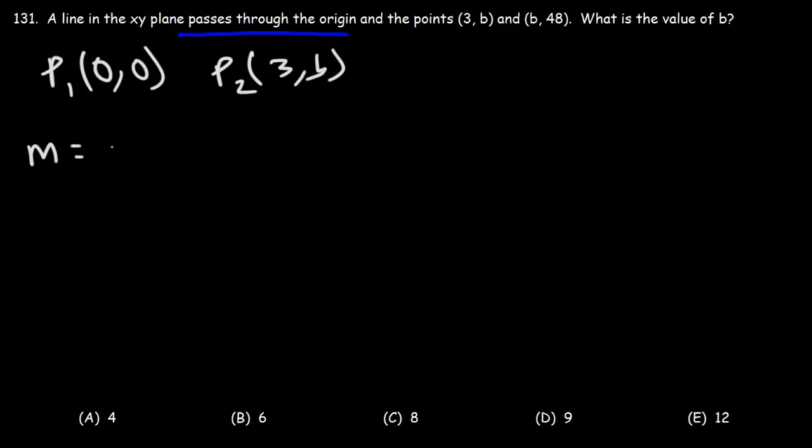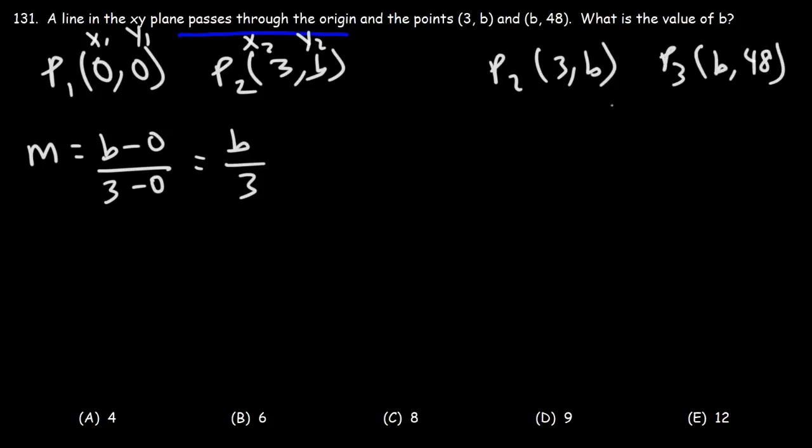So let's start by calculating the slope between the first two points. Let's call this p1 and p2. So it's going to be y2 minus y1. Let's call this x1, y1, x2, y2. So this is going to be b minus 0 divided by 3 minus 0. So the slope is b over 3. Now let's calculate the slope between the second and third point. So we're going to say this is x1, y1 and this is x2 and that's y2. So y2 minus y1, that's 48 minus b. x2 minus x1, that's b minus 3. Now keep in mind, this is going to equal this slope that we have here, that is b over 3.